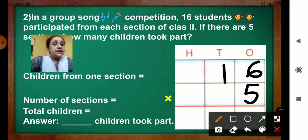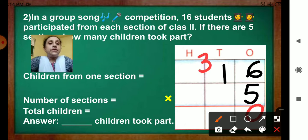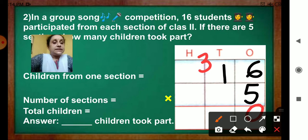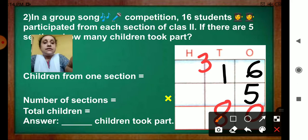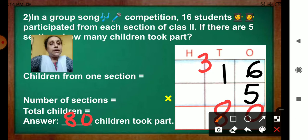5 sixes are, how much? 30. Write 0 and carry over 3 in the tens place. 5 ones are 5. 5 plus 3, 8. So 80. Answer is 80 children took part.